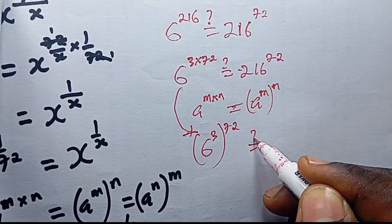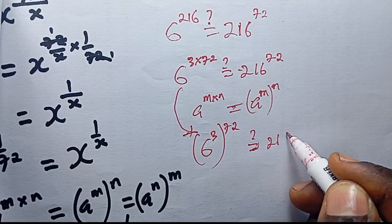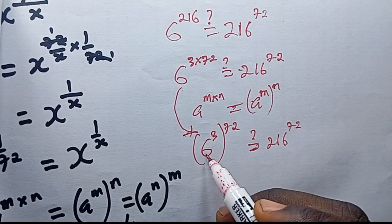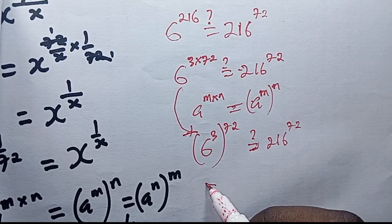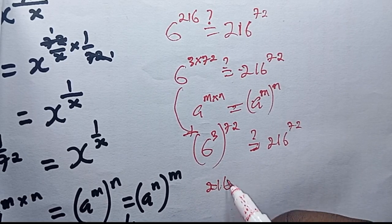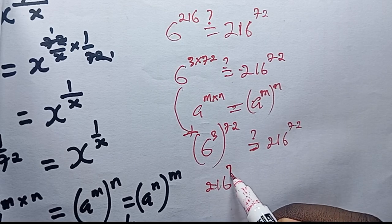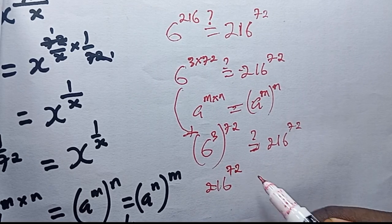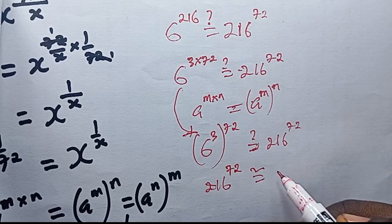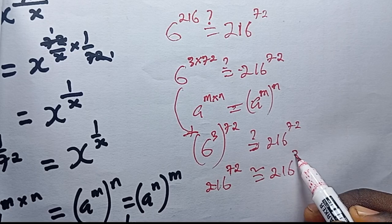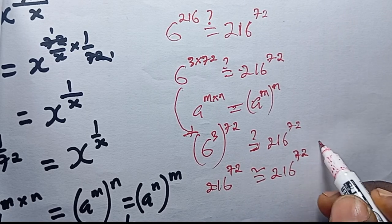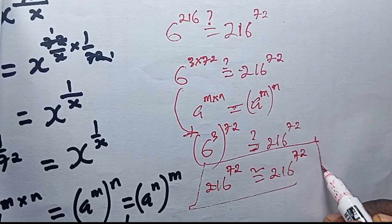If I utilize that here, I'm going to have 6 power 3, all raised to power 72. Obviously, 6 power 3 is 216, and this is power 72, which implies that x equals 216 actually satisfies the problem we just solved.